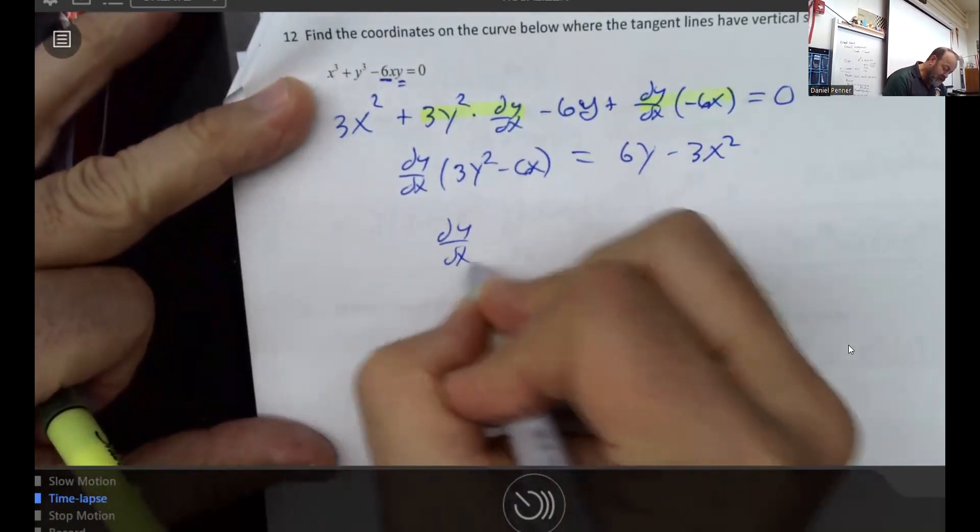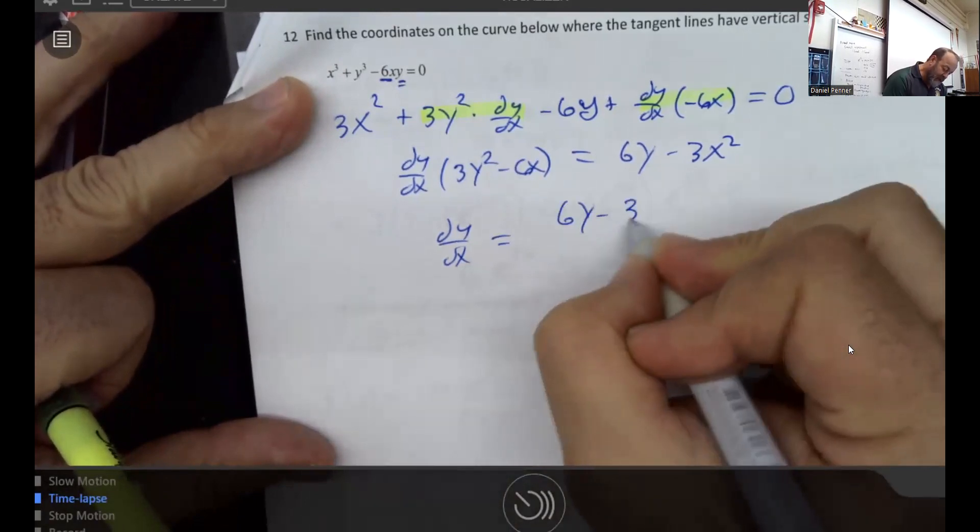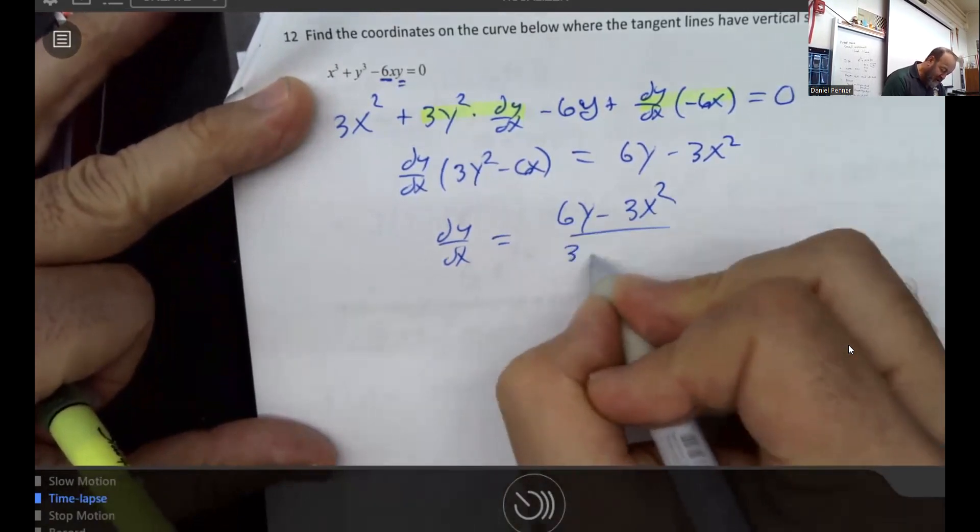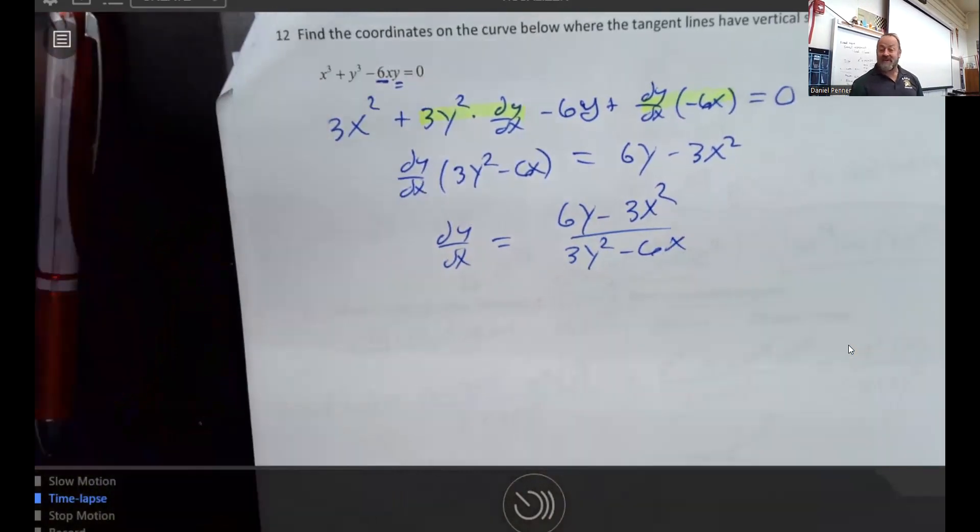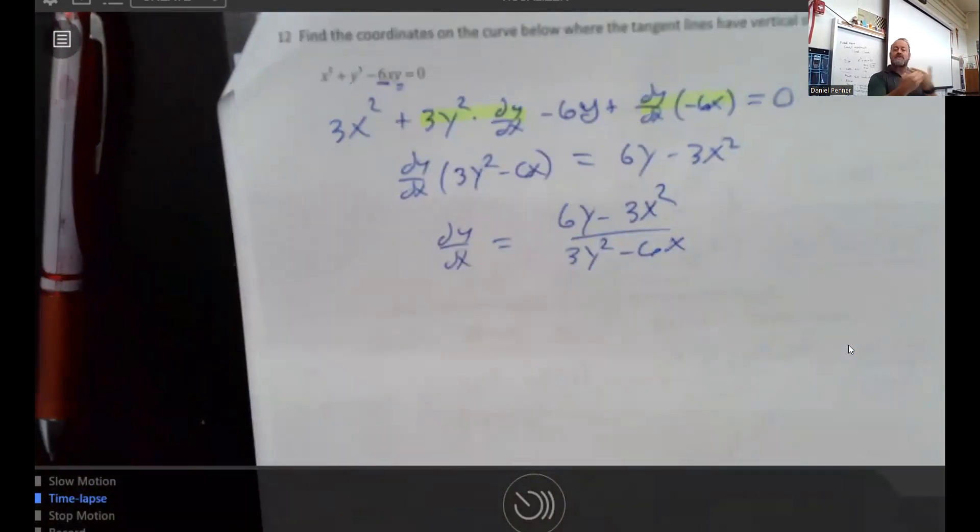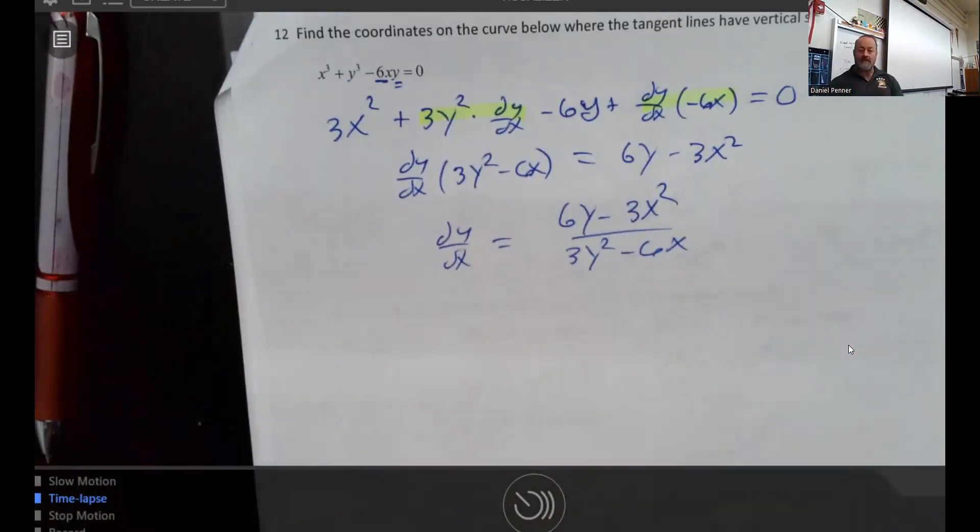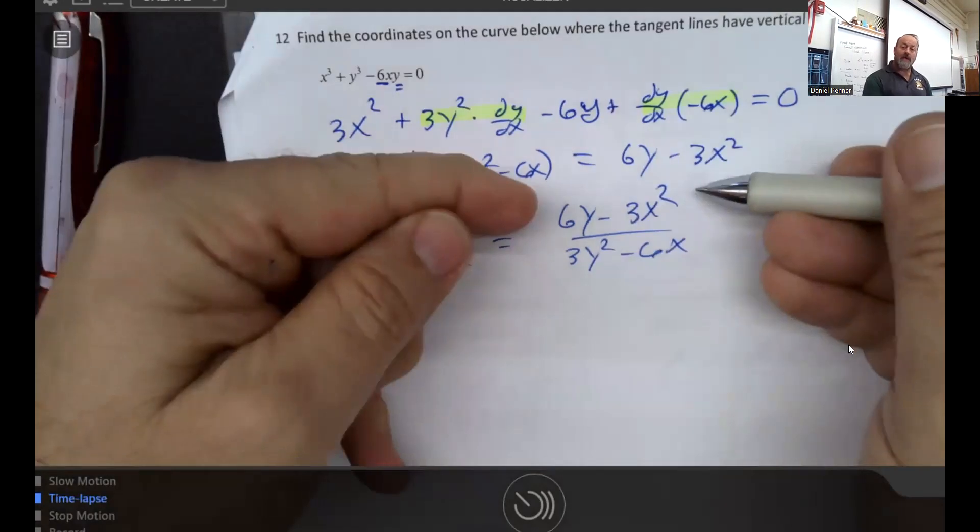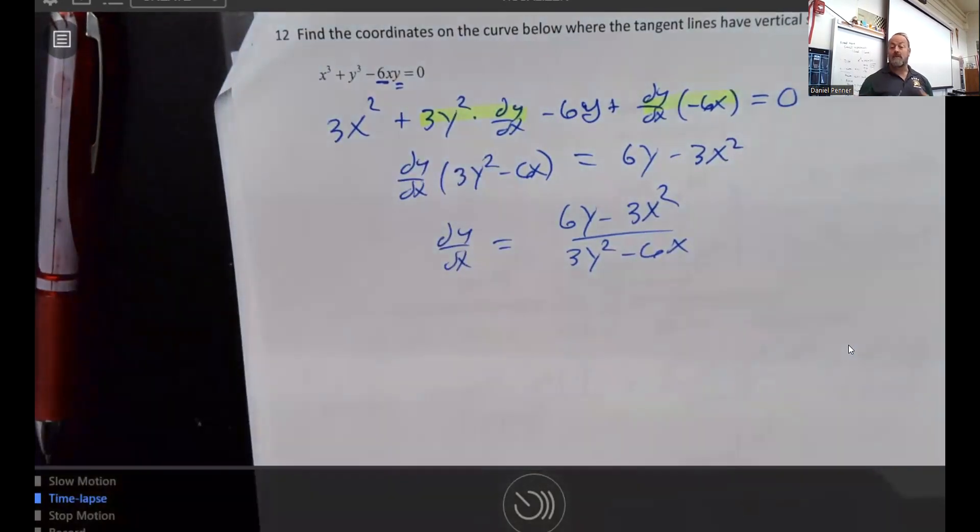So I end up with a numerator and a denominator that look awfully similar, don't they? They just look like they switched places. So keep in mind, there's two ways I could ask the question. I could ask, where is the slope horizontal? Well, that would be where the numerator is 0. Or I could ask where the slope is vertical, and that would be where the denominator equals 0.